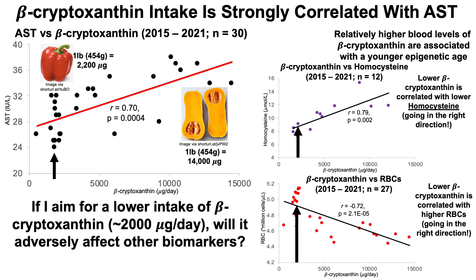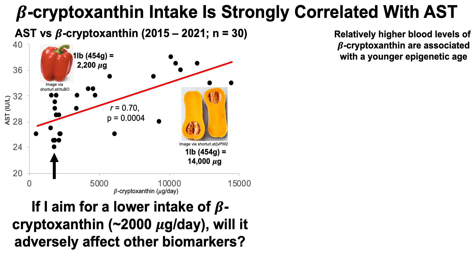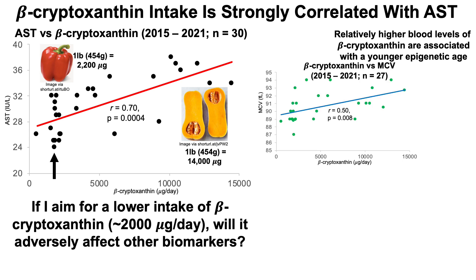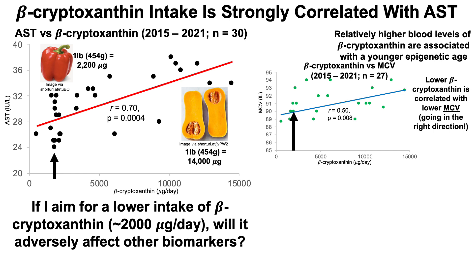So far, reducing my beta-cryptoxanthin intake may be associated with favorable effects for three biomarkers. But it's actually four. Here's the correlation between beta-cryptoxanthin and mean corpuscular volume, MCV — I have 27 measurements for this over the past six years. There's a moderate but statistically significant correlation of 0.5: higher beta-cryptoxanthin is correlated with higher MCV, going in the wrong direction. If I cut my beta-cryptoxanthin intake, that would be correlated with lower MCV, going in the right direction. So reducing my beta-cryptoxanthin intake may be associated with favorable effects for four biomarkers.